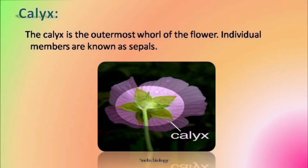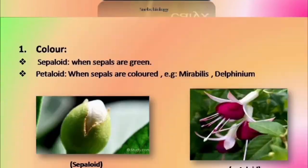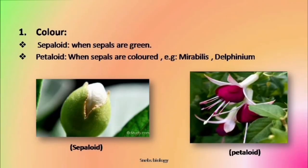First we talk about the outermost whorl of the flower — calyx. Individual members are known as sepals. If the sepals are green, they are called sepaloid, and if the sepals are colored, then they are called petaloid.